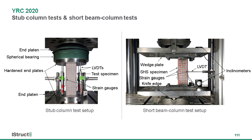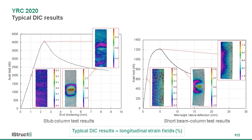Now let's look at the cross-section tests. We tested the specimens under different loading conditions. The stub columns were tested under axial compression with fixed-ended boundary conditions, while the short beam columns were tested under eccentric compression with knife edges providing pin-ended boundary conditions. In addition to conventional measuring devices, we also used DIC in all these tests. The DIC results show longitudinal strain fields, enabling us to know the deformation and strain across the entire monitored surface, and we can clearly see the development of local buckling.